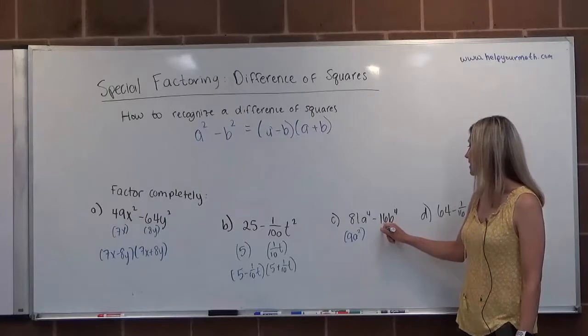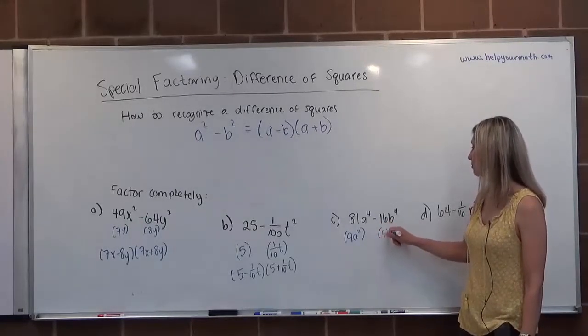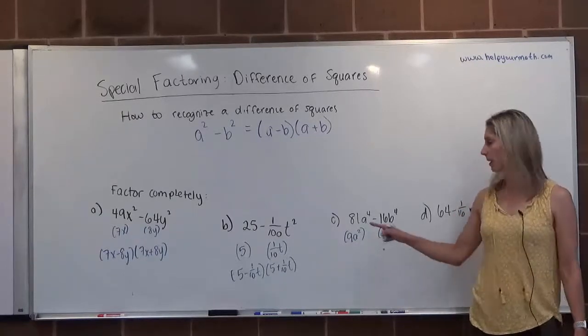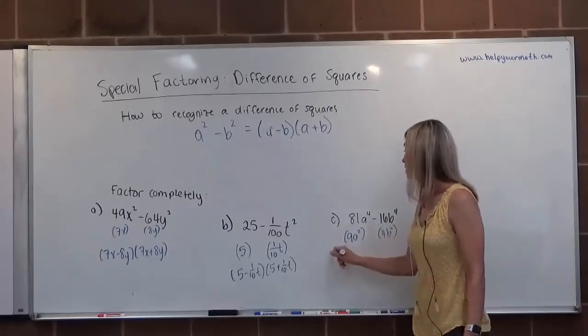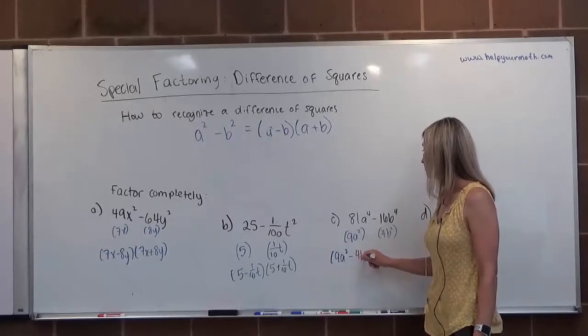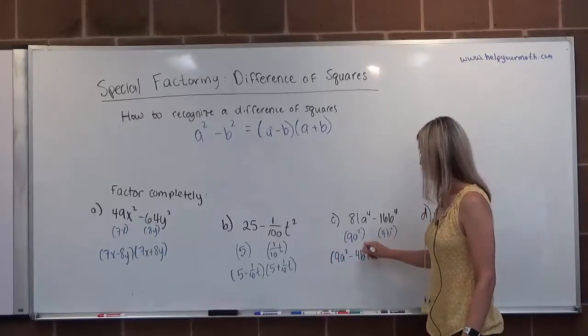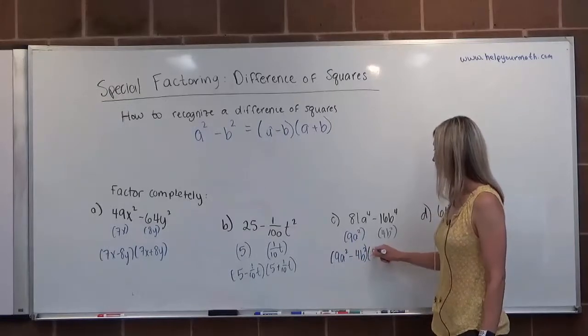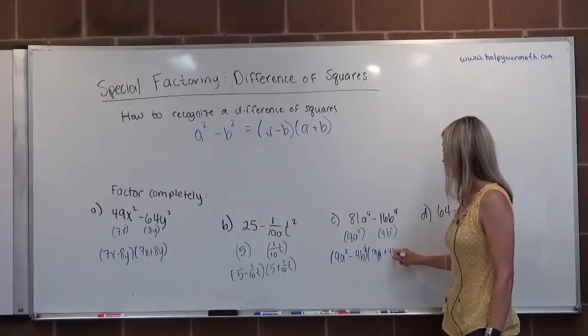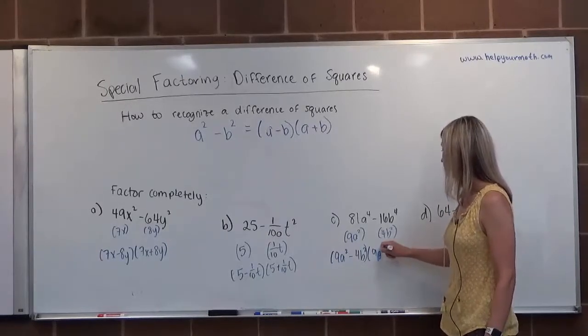Here, we have 16b to the 4th. The square root of 16 is 4. The square root of b to the 4th is b squared. So we do end up with two perfect squares and their subtraction. So we would have root minus root times root plus root.